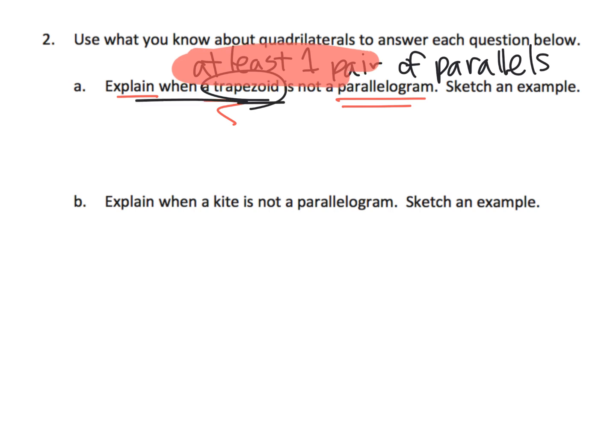So when is a trapezoid not a parallelogram? Well, this is a trapezoid. This is a parallelogram. But this parallelogram is also a trapezoid, because a trapezoid has at least one pair. And this happens to have two pairs of parallel lines. Because the way I tried to draw it, I tried to say that those guys are parallel and these guys are parallel. So a trapezoid is not a parallelogram when it only has one set of parallel lines, because these guys are not parallel. And that's the idea, is to draw a picture and explain your understanding.